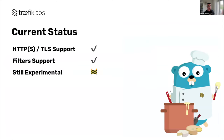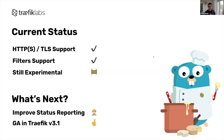With Traefik v3 we have raw support for HTTP, TLS, and filters, but the feature is still experimental. It's experimental because Gateway API v1.0 was released at the end of 2023 just as we were about to release Traefik v3.0 RC1. We kept it experimental and are still working on it, mainly on status reporting, which is a very important part of the specification. Our goal is to GA the feature as soon as possible, hopefully in Traefik v3.1.